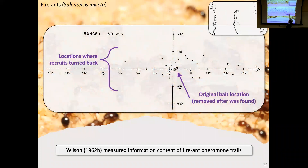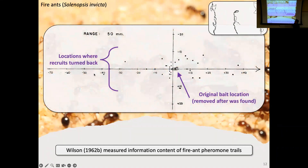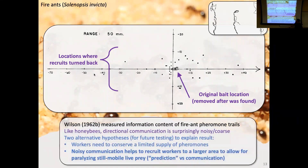He studied the turn-back points — that's kind of where the ant thought it was being led to. He examined the relationship between where the trail started and where the ants went to and did an information-theoretic analysis. This shows the turn-back points: the nest is way over here, each dot is a turn-back point, and the middle is where the feeder originally was. On average they arrived at where the feeder was, but there's quite a bit of spread in both directions. Wilson noticed this spread was identical to the spread seen in honeybees, and he thought that was really weird — ants laying trails on the ground should be able to have higher resolution.